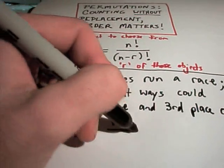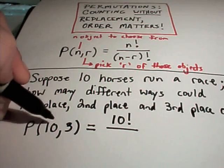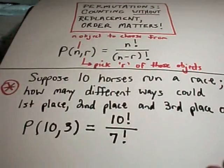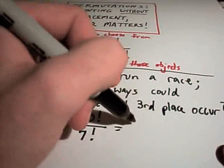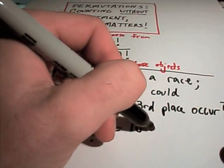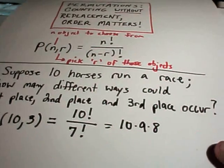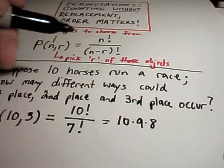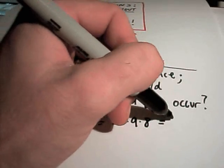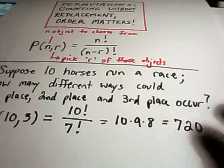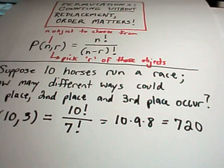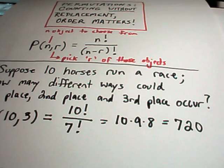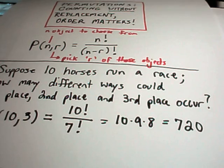So this is going to be 10 factorial, and you kind of hopefully saw the pattern, you can just subtract the two numbers on the bottom, you'll get 7 factorial. This is going to simplify to 10 times 9 times 8. So maybe work this out if you're not quite sure about this to see where I'm getting that, and that comes out to be 720.